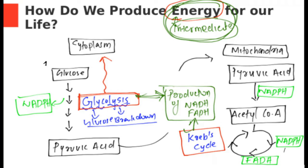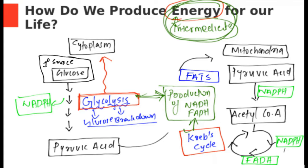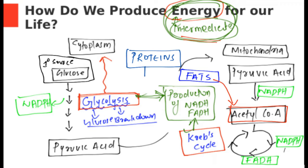The primary energy source for any cell is glucose. If the cell is lacking glucose, it depends on other molecules like fats. The fat molecule is converted directly into acetyl coenzyme A. And if fat is also not present, the cell depends on proteins. Some amino acids from proteins will be converted directly into glucose, and some other amino acids will go into acetyl coenzyme A. We'll discuss the details of that in another video.